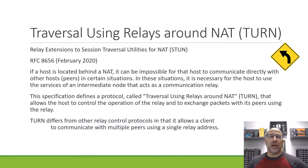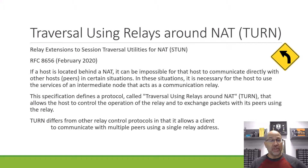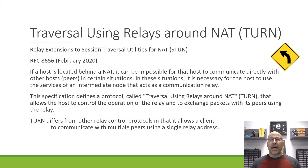The first one we're going to talk about is TURN — Traversal Using Relays Around NAT. If we look at the RFC number, it's 8656. This is up there in the RFC numbering scheme — we're just in 9,000 right now. This has been an RFC that's been updated a number of times, but the latest update is February 2020, so a very recent RFC. And here's what it says: if a host is located behind a network address translation router or a NAT box, it can be impossible for that host to communicate directly with other hosts or peers in certain situations.